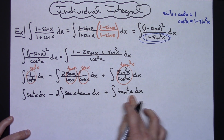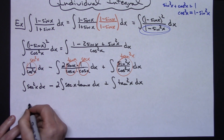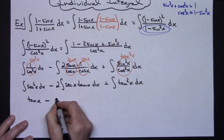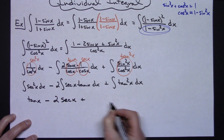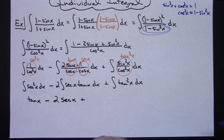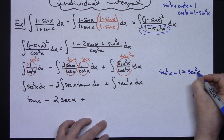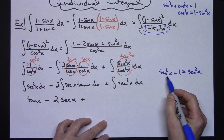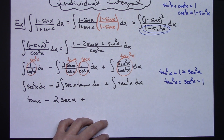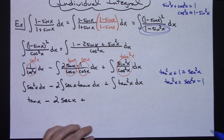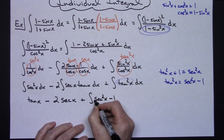These first two integrate very simply, and we'll need another Pythagorean identity for the third. Integrating secant squared x gives tangent x — that one should be memorized. Minus 2 times the integral of secant x tangent x, which gives secant x — also one to memorize. For tangent squared x, we use the identity: tangent squared x plus 1 equals secant squared x, so tangent squared x equals secant squared x minus 1. Substituting that in, we have the integral of (secant squared x minus 1) dx.